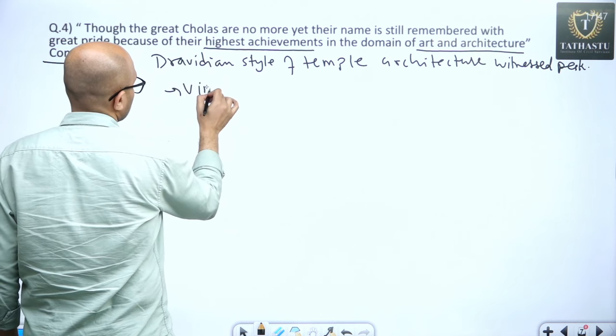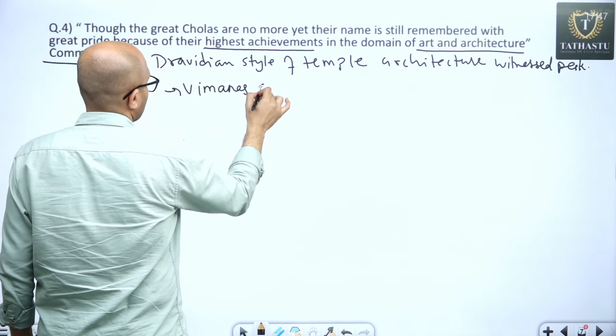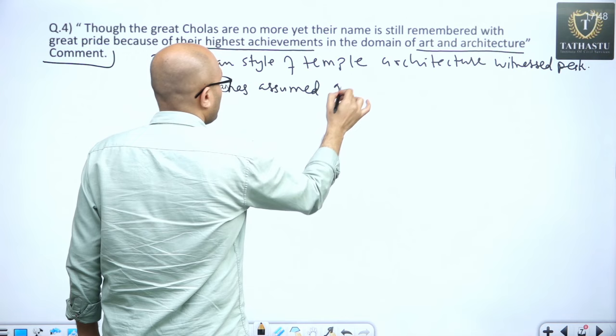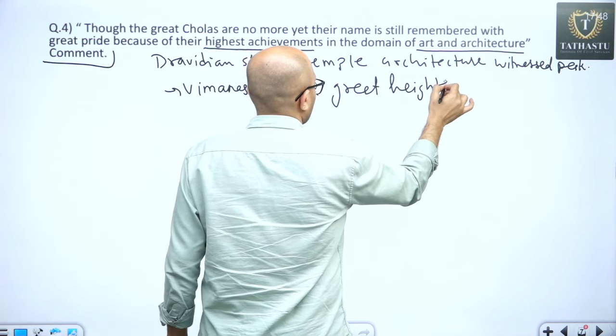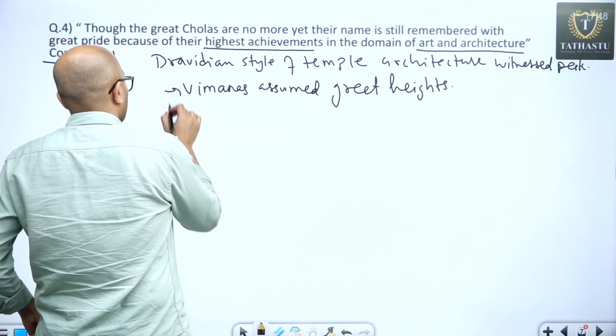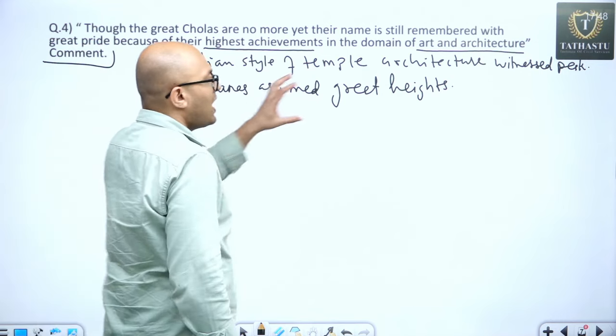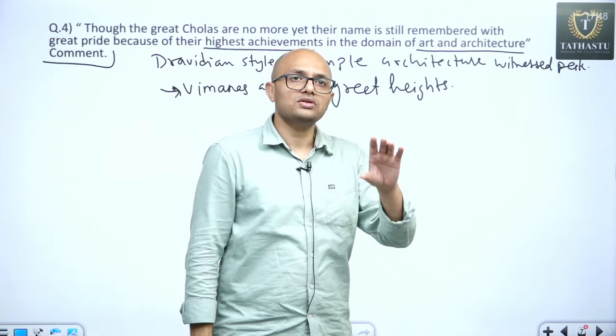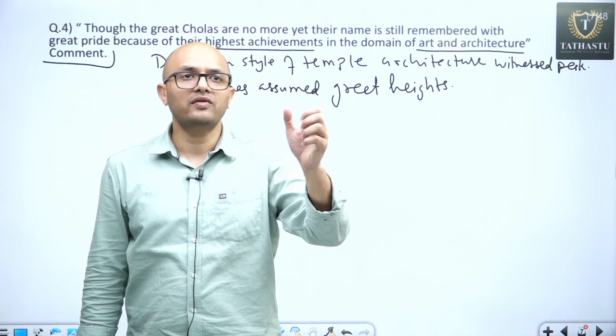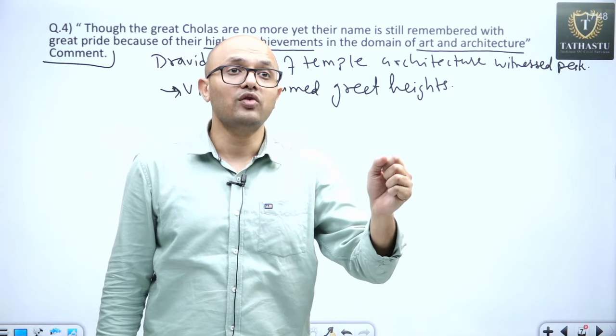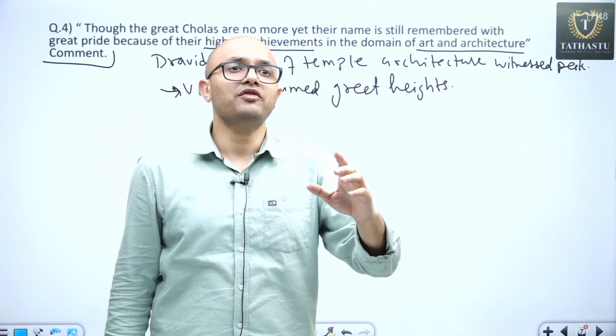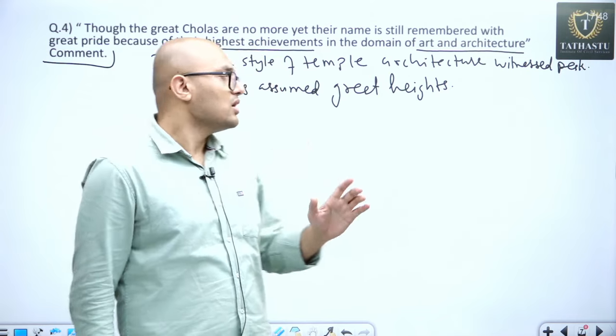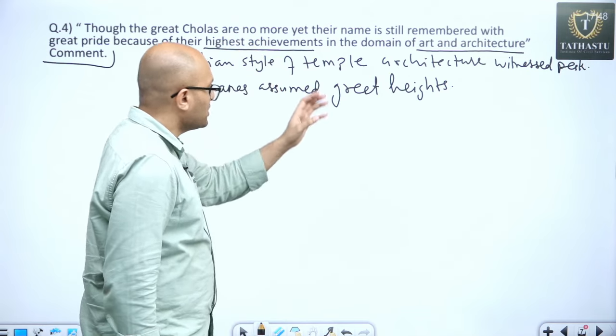Vimana assumed great heights. Because the height of Vimana was attached with the power and might of the king, so king wanted to show I am the biggest monarch, so my Vimana height should be highest, Vimana assumed great heights.